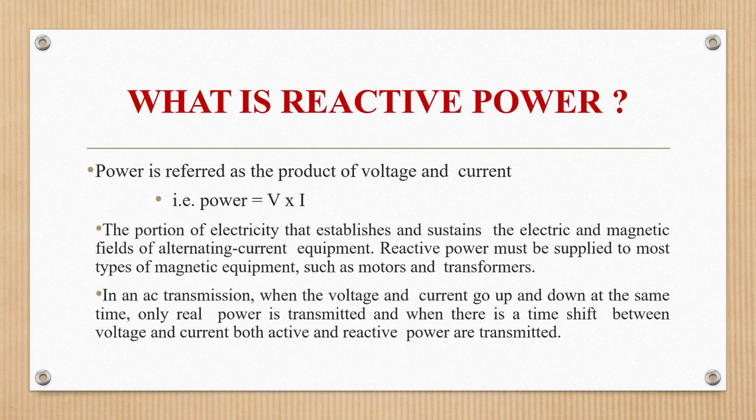Power is referred to as the product of voltage and current. The portion of electricity that establishes and sustains the electric and magnetic fields of alternating current equipment is reactive power. Reactive power must be supplied to most types of magnetic equipment such as motors and transformers. In an AC transmission, when voltage and current go up and down at the same time, only real power is transmitted. When there is a time shift between voltage and current, both active and reactive power will be transmitted.